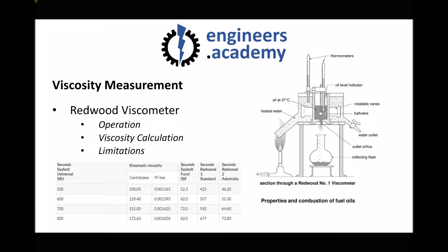Regarding limitations: Redwood one is for lower viscosity fluids with a smaller orifice, so it's only suitable for lower viscosity fluids, otherwise it would take too long for the fluid to flow. However, Redwood two has a much larger orifice and can be used to measure higher viscosity fluids. For example, at a kinematic viscosity of 151 centistokes, it would take 592 seconds through Redwood one but only 65 seconds through Redwood two. So we have that flexibility. Converting from time in seconds to kinematic viscosity is also very straightforward, which is one of the numerous benefits of the Redwood viscometer.